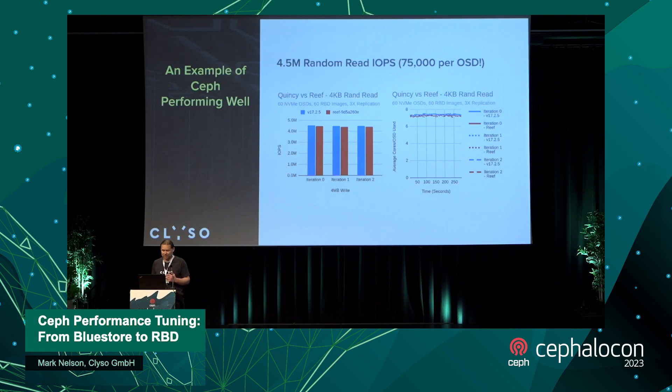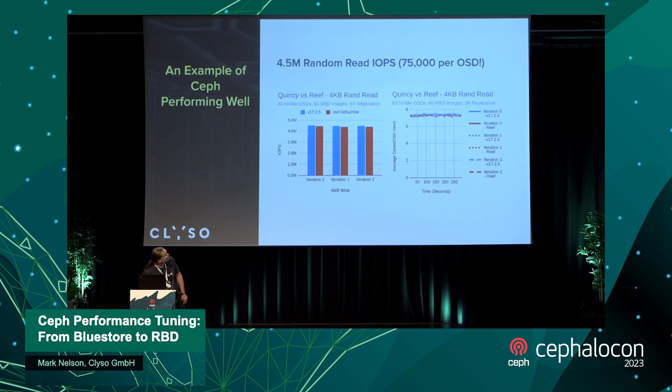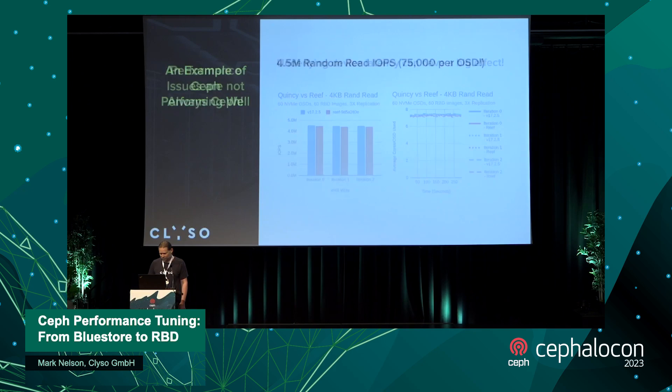Let's look at an example where Ceph is actually performing well. This is very recent testing on Reef — a 60 NVMe cluster spread across 10 nodes, 60 RBD images, 3x replication. We can do about 4.5 million IOPS on this cluster, at least for reads. We're burning somewhere around 8 cores per OSD to do this, so it takes some CPU, but we're seeing pretty even performance across multiple iterations and consistent CPU usage. Things look pretty good in this case.